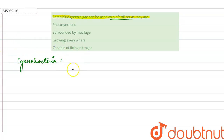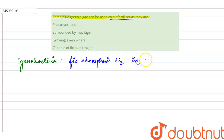Now cyanobacteria have a speciality — they are capable of fixing atmospheric nitrogen in anaerobic conditions, that is, without the presence of oxygen.